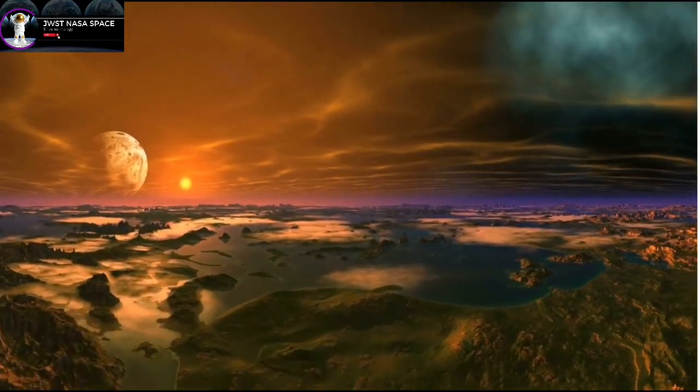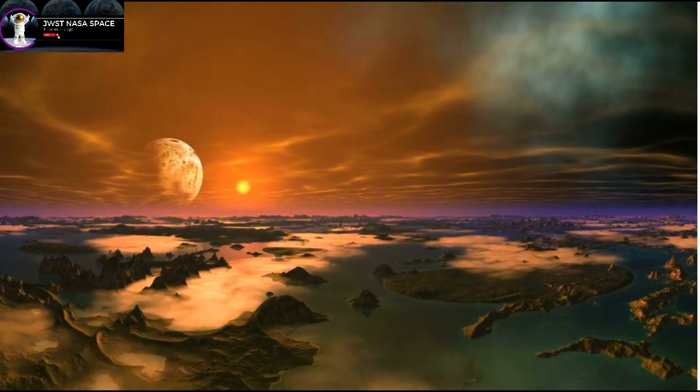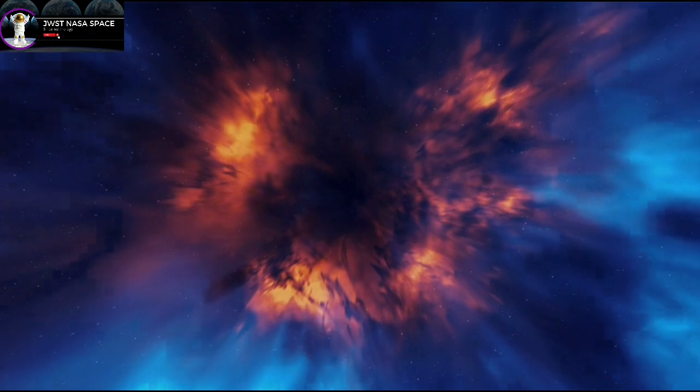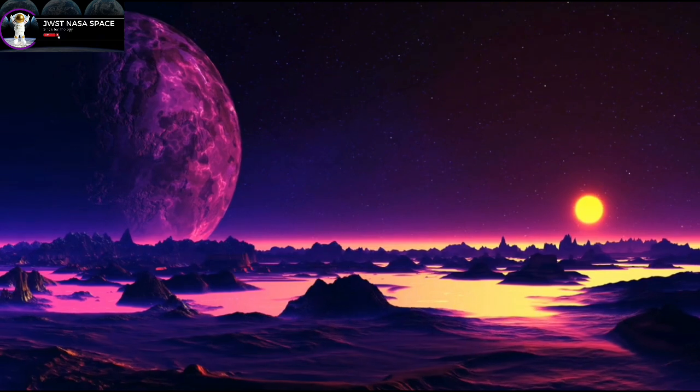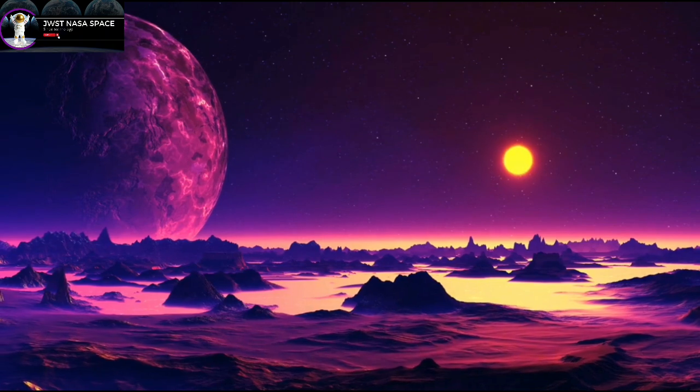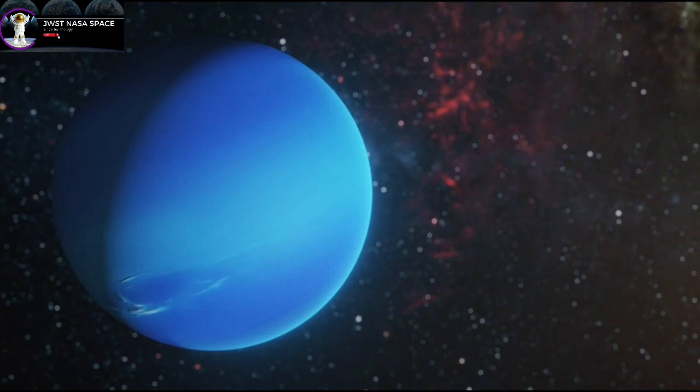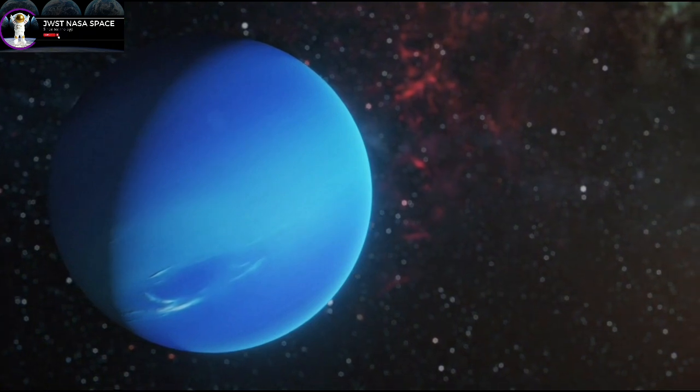However, due to its close orbit, Proxima b is likely tidally locked to its star, meaning one side of the planet constantly faces the star while the other side remains in perpetual darkness. This could create extreme temperature differences across the planet, potentially making conditions on Proxima b more challenging for life to survive unless a mechanism like strong atmospheric circulation or a water cycle could help balance the temperatures.